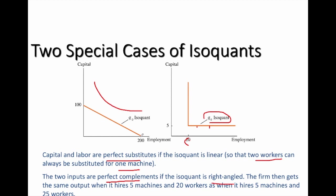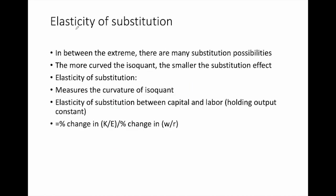With that understanding, let's move on to the concept of elasticity of substitution. The elasticity of substitution gives us a measure of the curvature of the isoquants — the more curved the isoquant, the smaller the substitution effect. The elasticity of substitution between capital and labor, holding output constant, is calculated as the percentage change in the capital-worker ratio over the percentage change in the input price ratio.